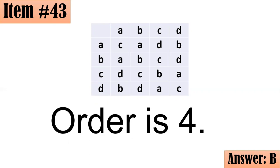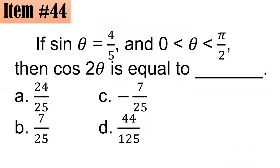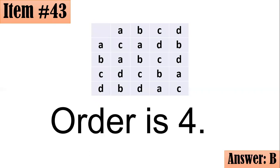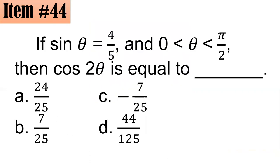Item 44: If sine theta equals 4 fifths, and theta is in the first quadrant, between 0 and pi over 2, then cosine 2 theta is equal to what? Did you go for A, B, C, or D?